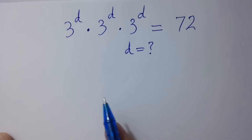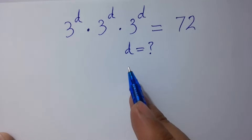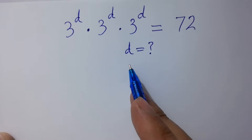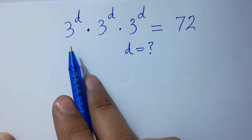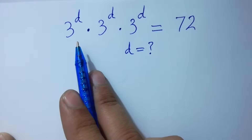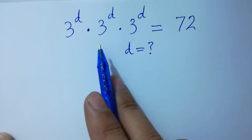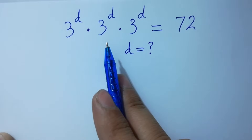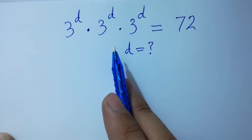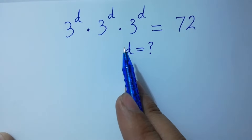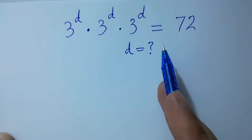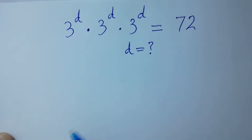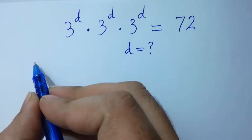Hello friends. Find the value of d if 3 to the power d times 3 to the power d times 3 to the power d equals 72. Let's have a solution.